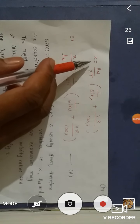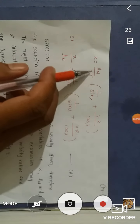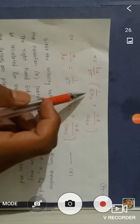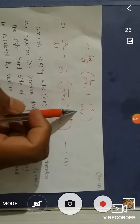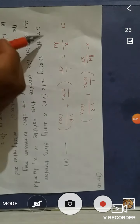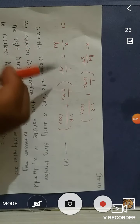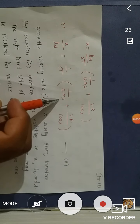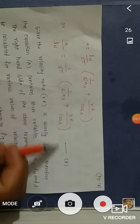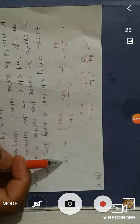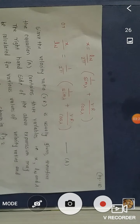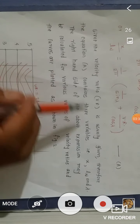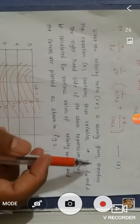The above expression may be rewritten as: X equals LN divided by 2π into (1/sin λ + velocity ratio/cos λ), or equivalently X/LN equals 1/(2π) times (1/sin λ + velocity ratio/cos λ). We call this equation A.